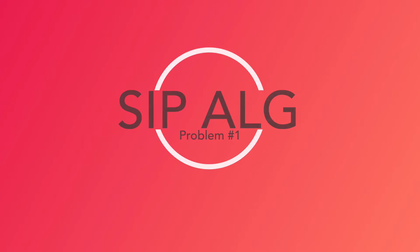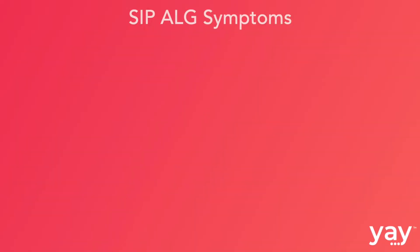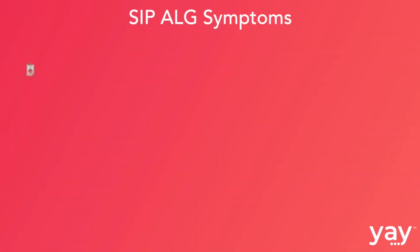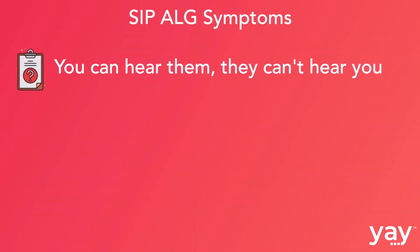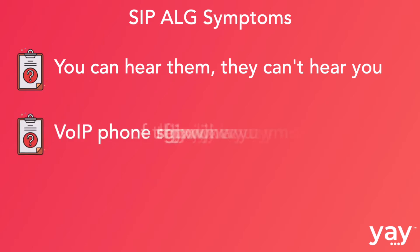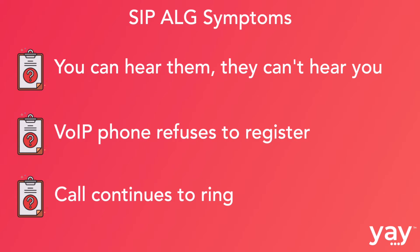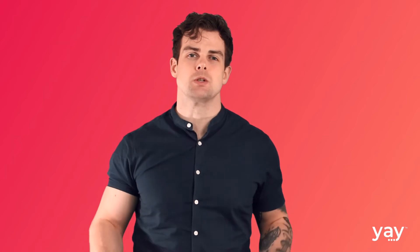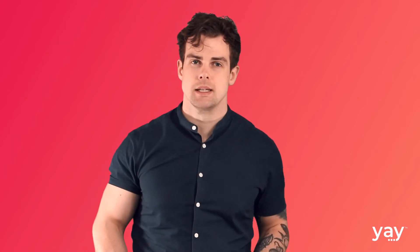SIP-ALG. Symptoms: you can hear the other end of the line, but they can't hear you. Your phone refuses to register. The phone continues to ring after the call is picked up. If you recognise any of the above symptoms, SIP-ALG is the most likely culprit.